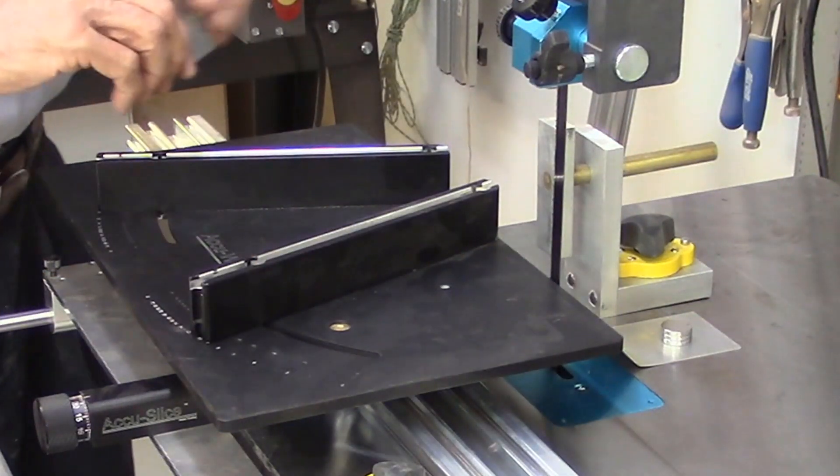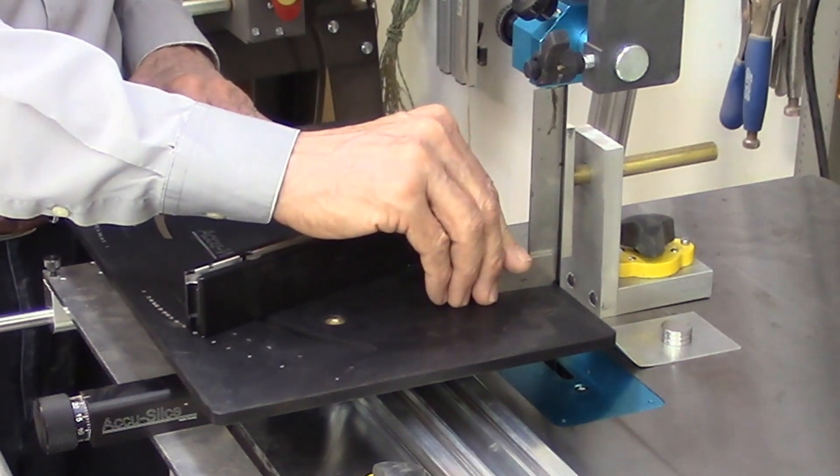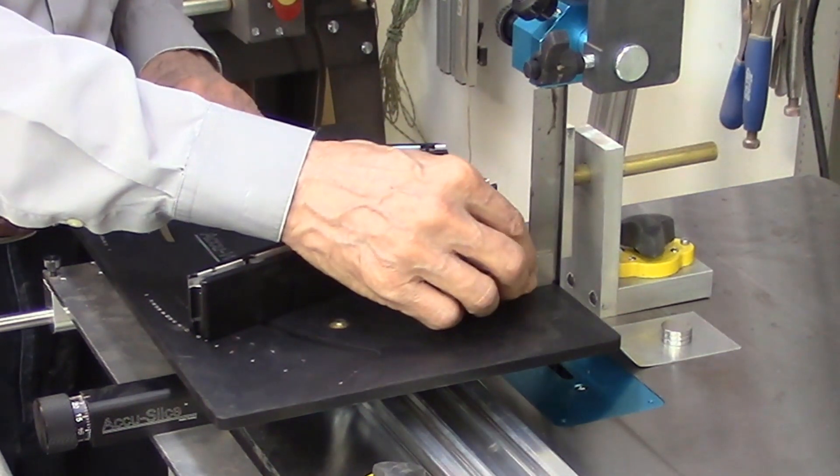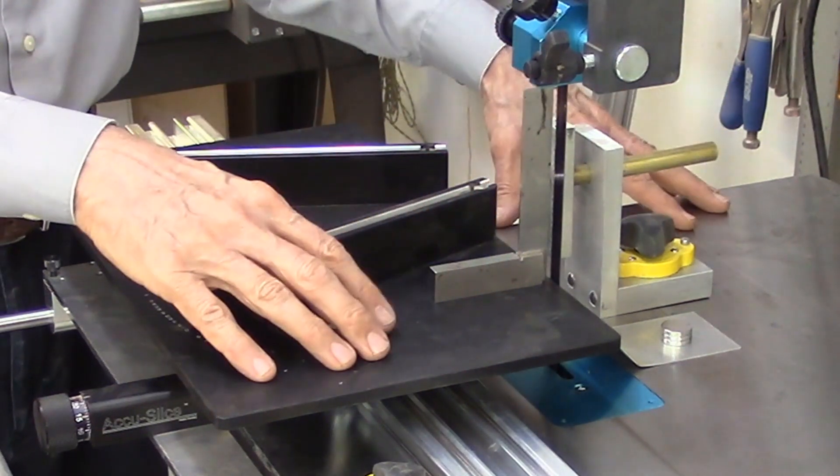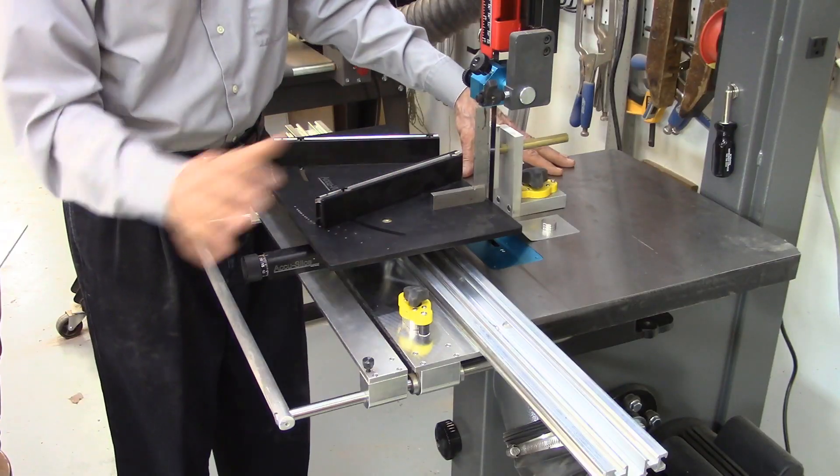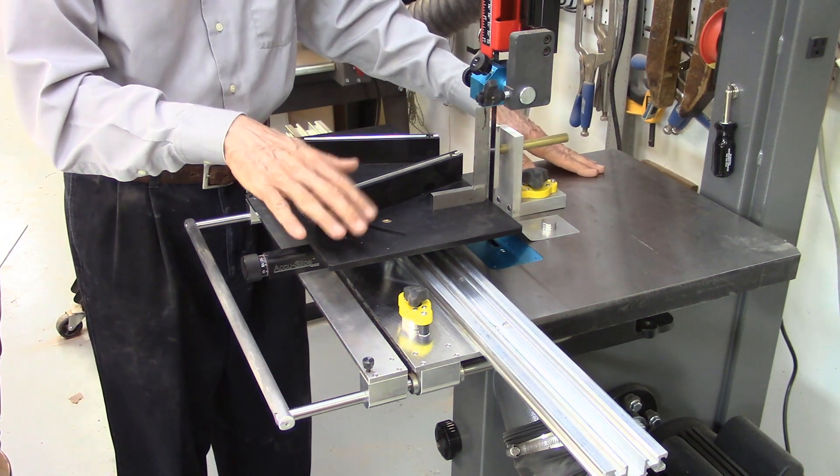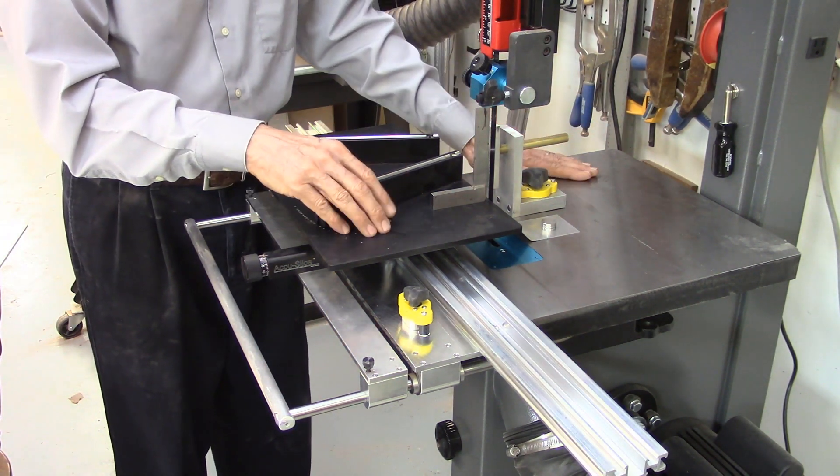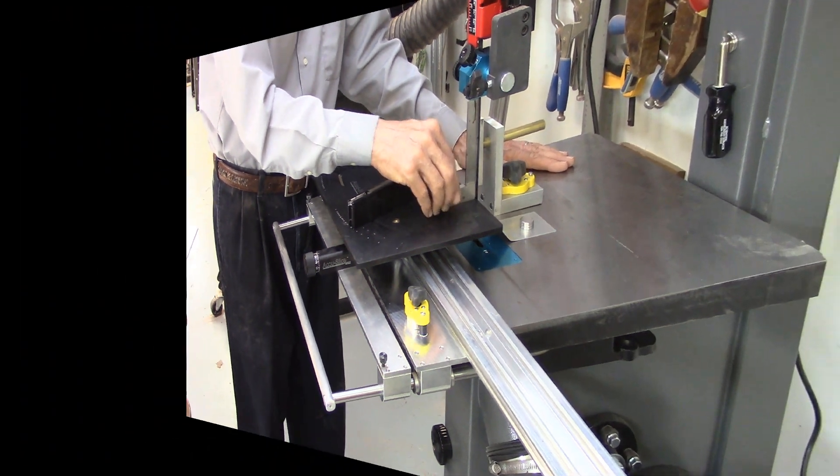Next, I want to check the bandsaw blade to make sure it's perfectly perpendicular to the AccuEdge table. So you have to get that adjusted so it's perfectly perpendicular. If not, you need to adjust the bandsaw table. Most bandsaws have two knobs underneath that should loosen, adjust the table, re-tighten the knobs back up after it's perfectly perpendicular to the AccuEdge table.